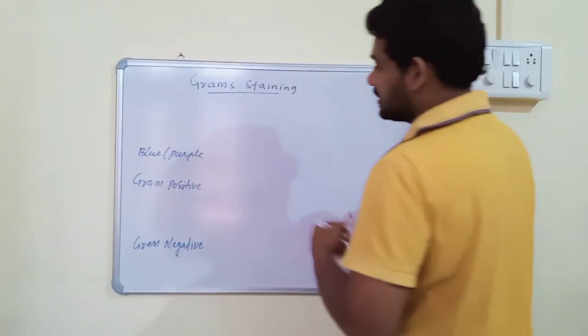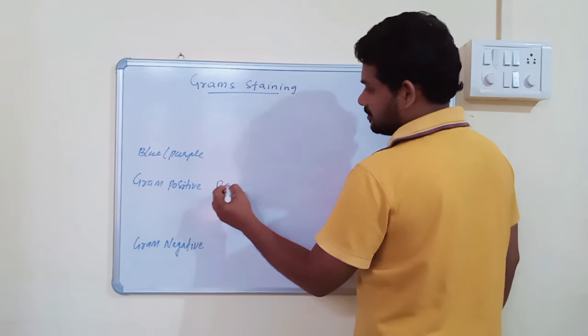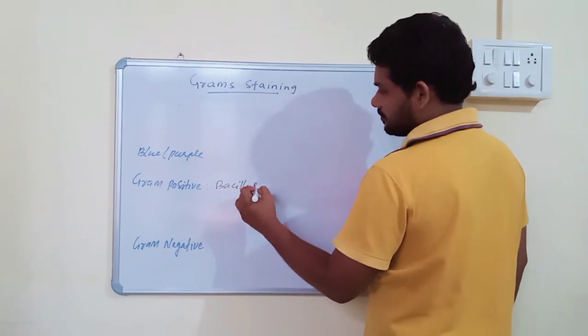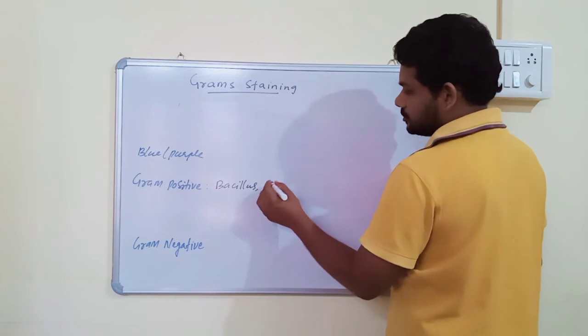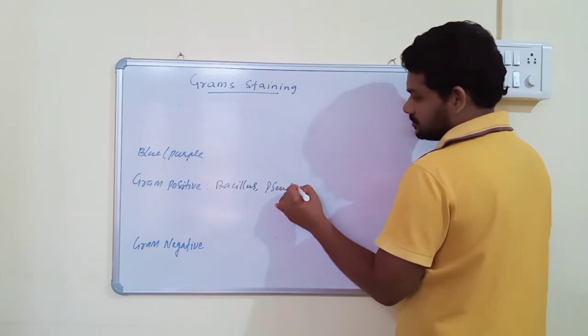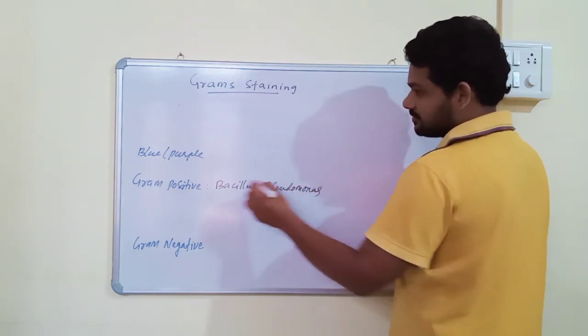Then we can differentiate some bacteria as Gram positive and some as Gram negative. Gram positive bacteria, some examples are Bacillus, Rhodomonas, Pseudomonas.